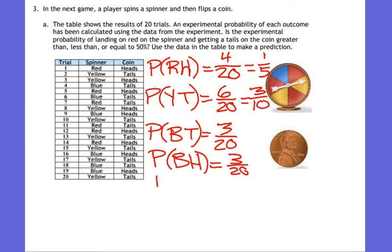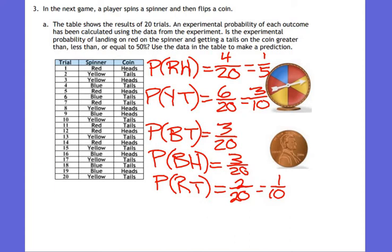What else could happen? Red tails. How many red tails? Two. 2/20 simplifies to 1/10. Any other possible outcomes? Yellow heads. Out of twenty, how many yellow heads? Two. That's 2/20 = 1/10.